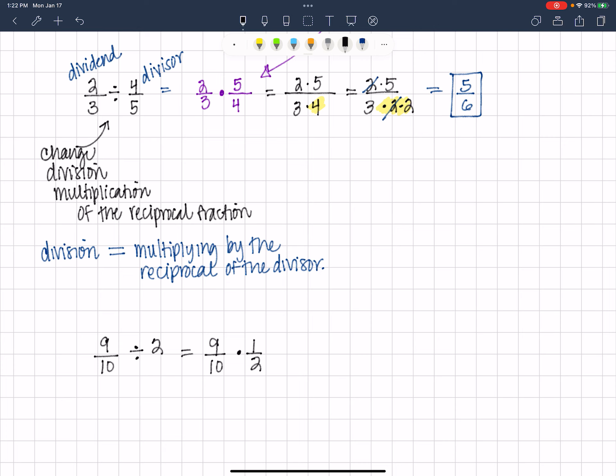9 tenths times 1 half is equal to 9 times 1, which is 9. 9 over 10 times 2, which is 20. And that's how we get 9 twentieths.